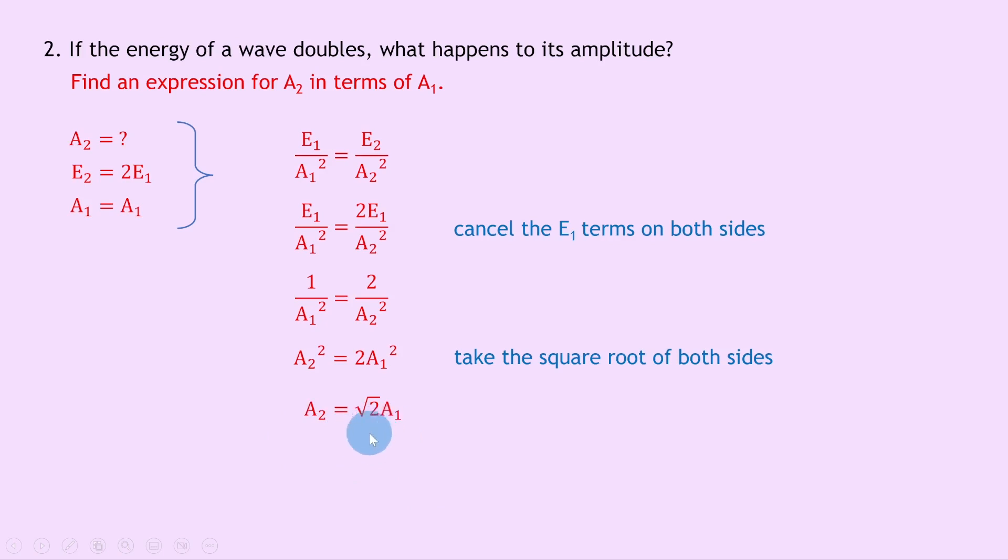So therefore we can see the final amplitude is equal to a factor of root 2 times the initial amplitude. So therefore we can see that doubling the energy of a wave causes the amplitude to increase by a factor of root 2.